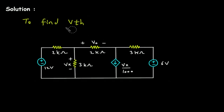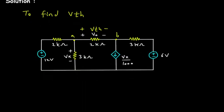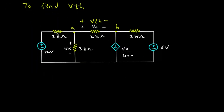VO will be our Vth — this is the plus terminal and this is the minus terminal. Let's say this is node A and this is node B. We will apply KCL. Let's say this is the reference node. Let's say this is current I1, this is current I2, this is current I3, and also let's say this is current I4.